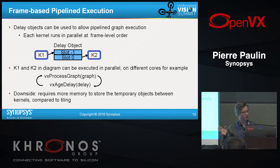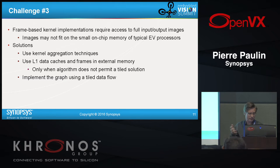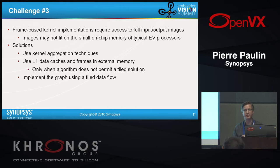Frame-based pipeline execution and delay objects — I don't need to explain those here. You know what delay objects are for: to enable parallelism between two data-dependent kernels. The downside of frame-based execution is that you need to store the entire frame. Looking at the OpenVX kernels, about two-thirds of them are tile-able. Tiling is an extremely important optimization. In some cases you can use kernel aggregation techniques, as AMD's presentation beautifully demonstrated — doing it automatically reduces bandwidth and keeps computation local. L1 caches can help but consume more power, so the most efficient approach is tiled implementations.